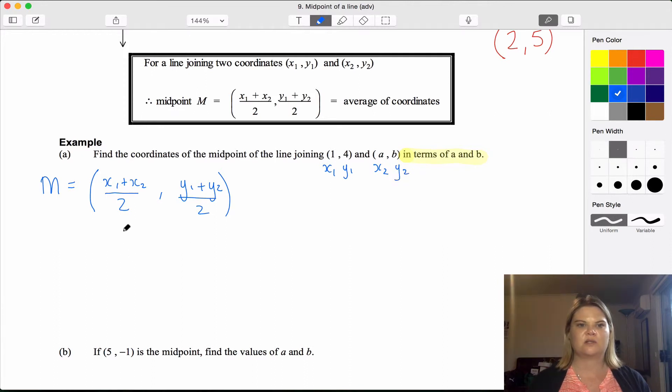And to make it so that I don't make an error, I'm going to number these x1, y1, x2, y2, so I know which ones I'm substituting in. Now I need to substitute in: x1 is 4, x2 is a, so 4 plus a divided by 2. Comma. Y1 is 4 plus—x1 is 1, not 4.